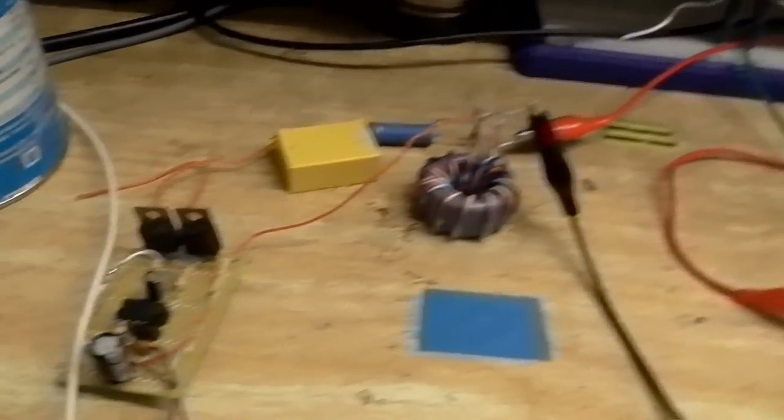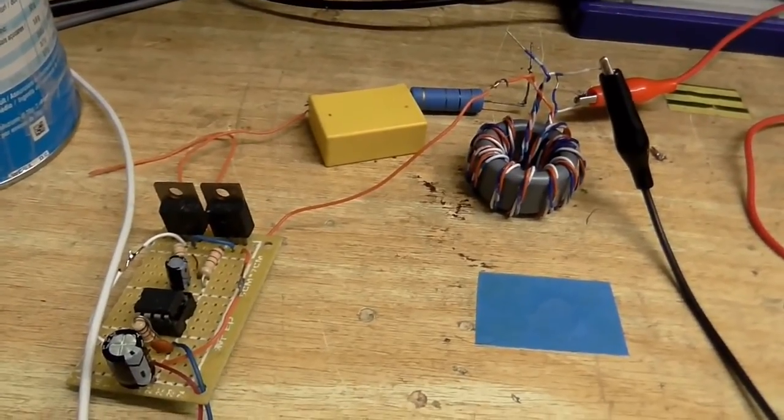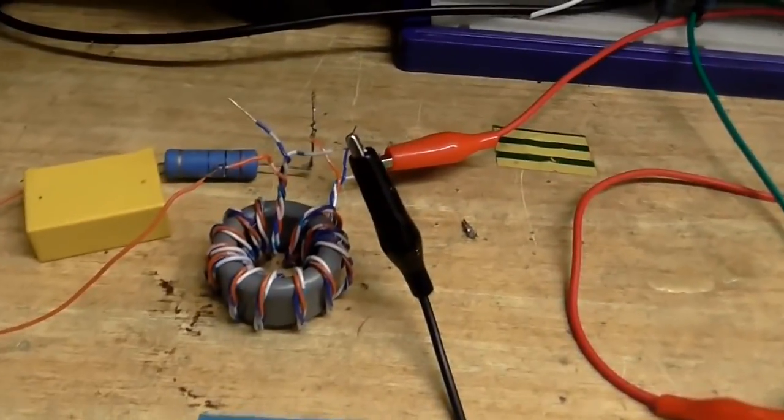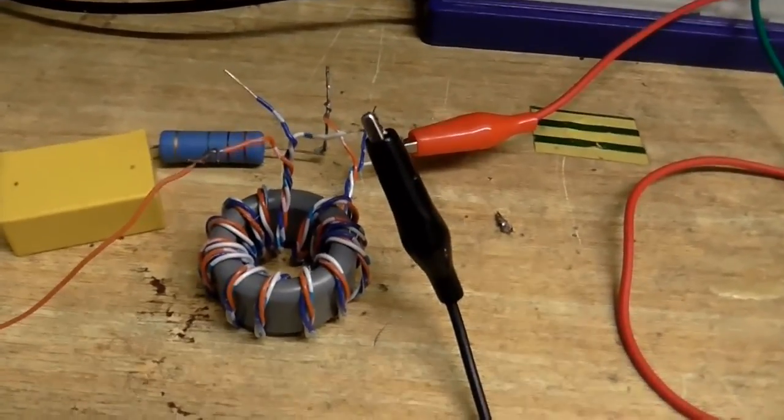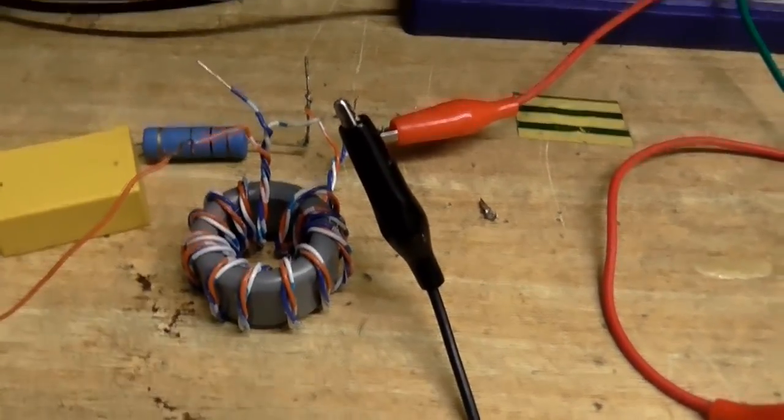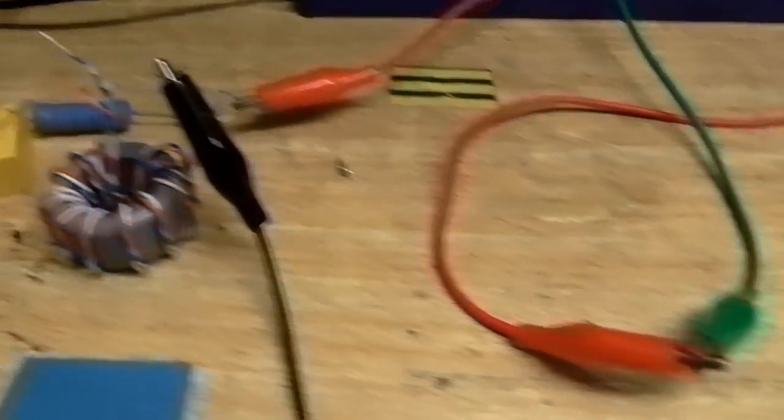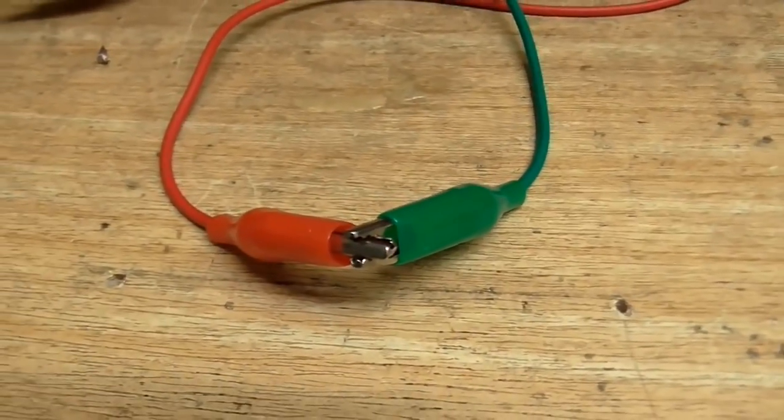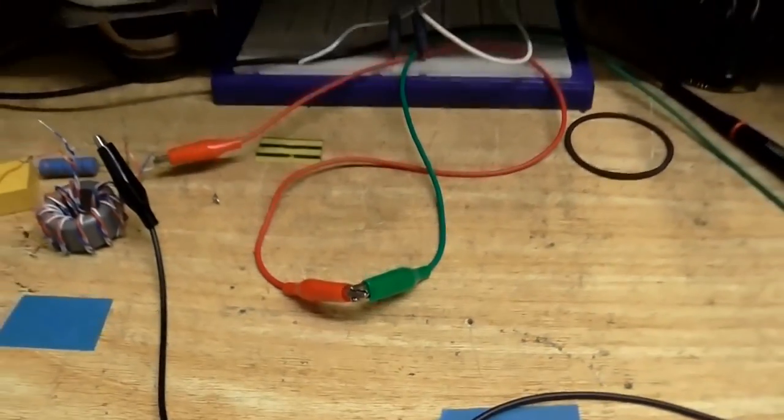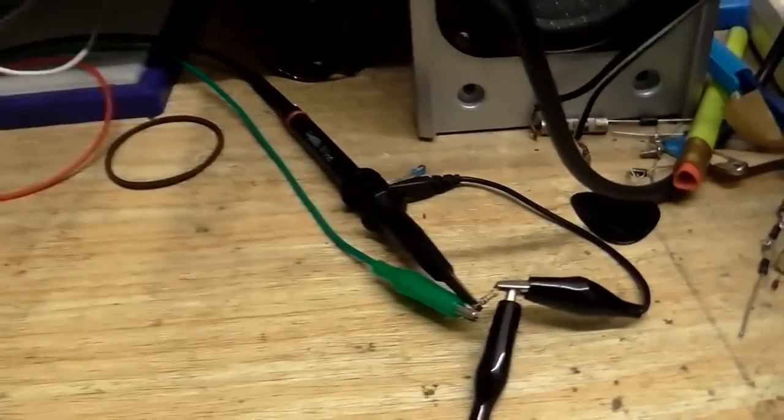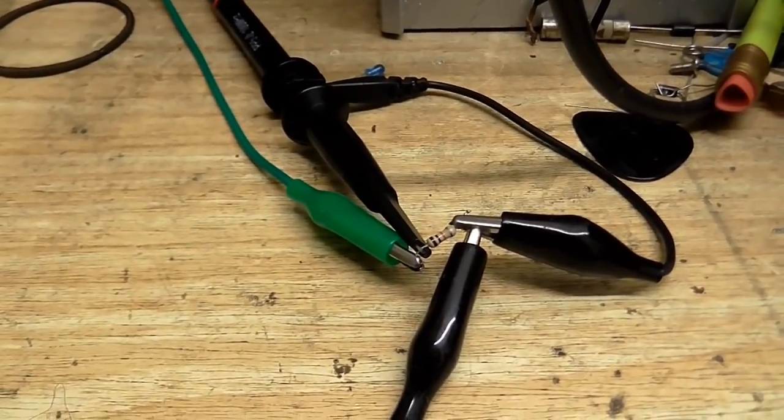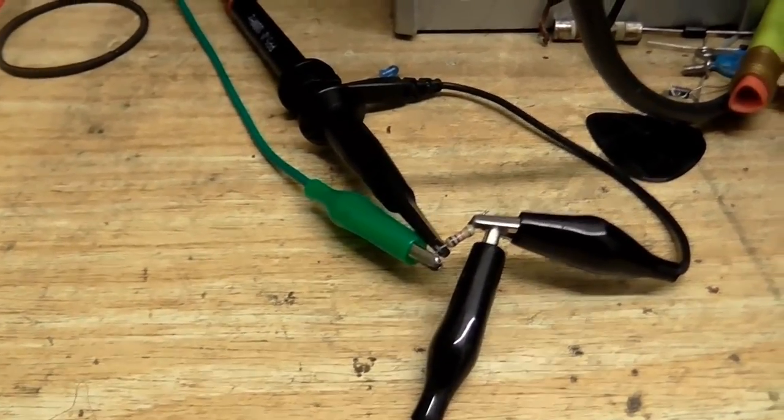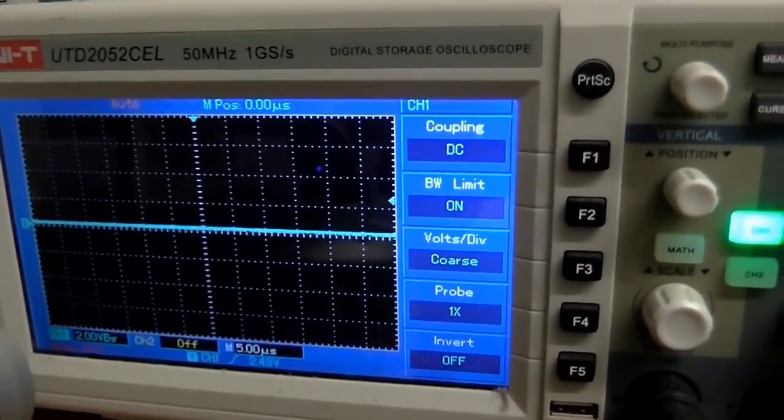And this is the setup we've got. So I've got a square wave oscillator which is going into this transformer here to make sure that the output is AC only. And this is where the diode we're going to test is connected, or going to be connected. And then over here, just got a little 10K resistor acting as a load for the diode. And we're going to see what the scope makes of it.